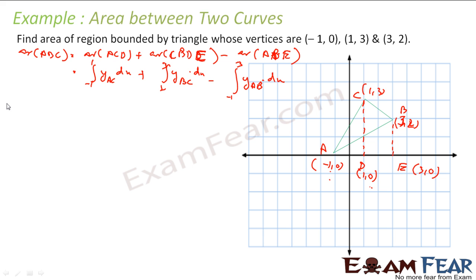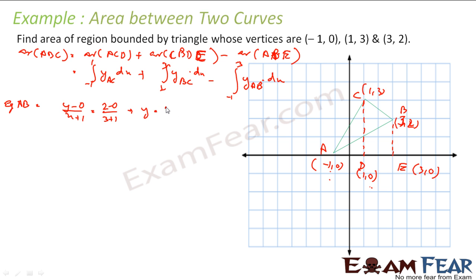Let us find the equation of line AB. Using the two-point form: Y minus 0 divided by X minus (minus 1) equals (2 minus 0) divided by (3 minus (minus 1)), which is 2 over 4, giving Y equals (1/2)(X plus 1). This is the equation of line AB.